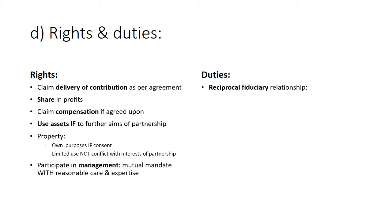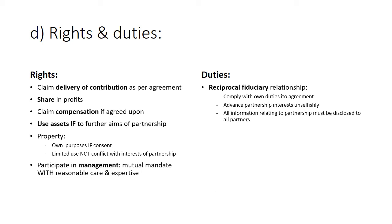Partners have reciprocal fiduciary duties, and there are three fiduciary duties. Firstly, partners must comply with their own duties in terms of the agreement — so if you have agreed to contribute 25,000 rand unconditionally, you have the duty to comply with this agreement. Partners must also advance the partnership interests unselfishly, and disclose all information relating to the partnership. Partners also have the duty to keep proper accounts, and are in return entitled to access the accounting records of the partnership, so that you can see what is going on in the books of the partnership.